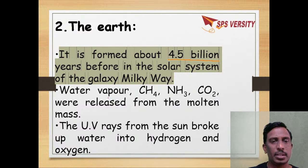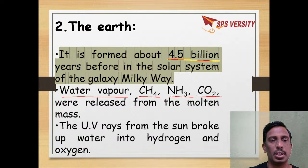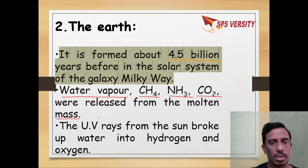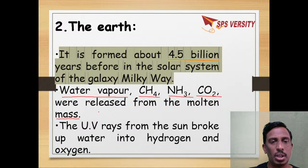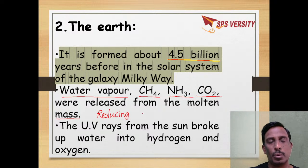When Earth originated, its atmosphere consisted of water vapour, methane, ammonia, and carbon dioxide, which were released from the molten mass. There was no oxygen. This is called the reducing atmosphere.